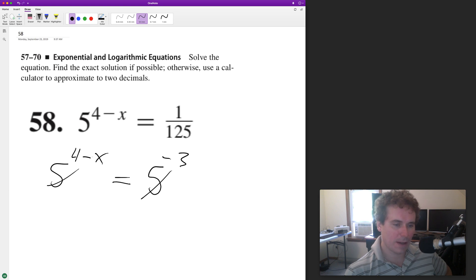we can drop these. And we end up with 4 minus x is equal to negative 3. So we solve for x. So subtract 4 from both sides. We end up with negative x equals negative 7. Move my work over here. And we end up with x is equal to 7.